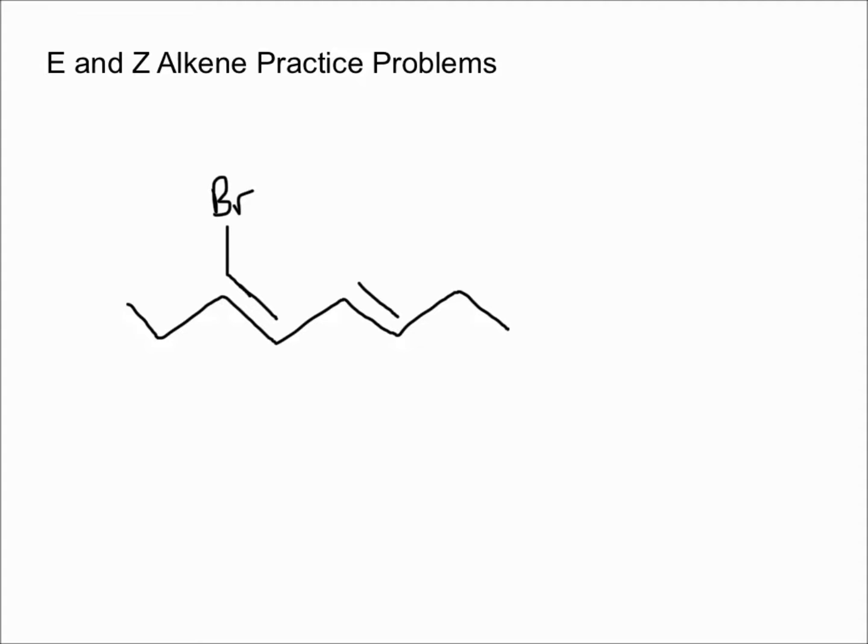You want to start with the longest chain. We're gonna start here because if we start 1-2-3 here, it gives the bromine the lower number. The priority remember is the alkene, so either way the alkene starts at number 3, but numbering it from left to right gives the bromine the lower number.